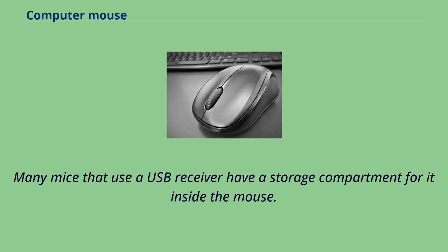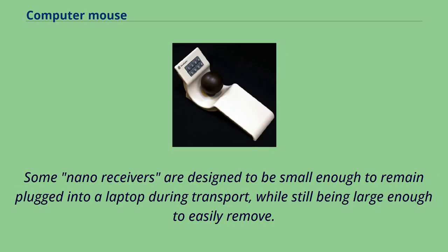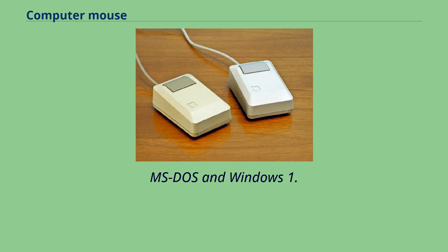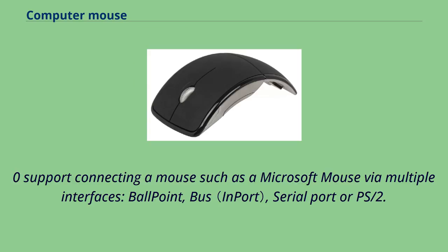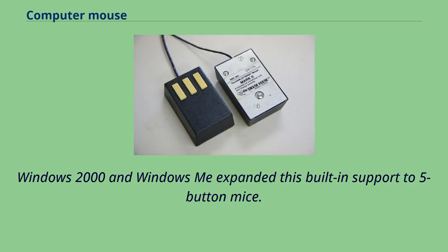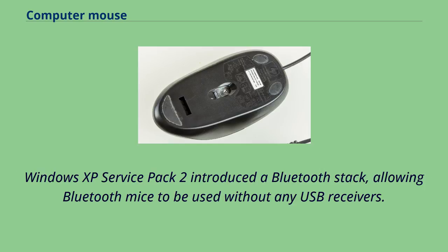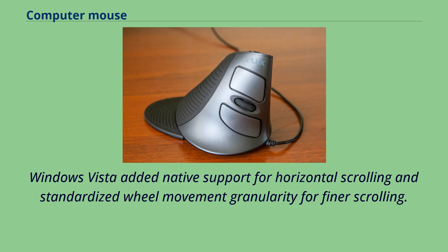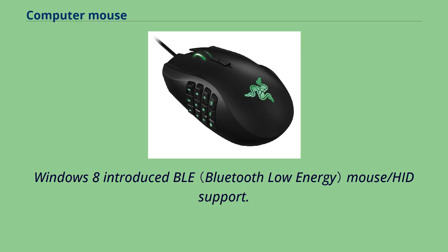MS-DOS and Windows 1.0 supported connecting a mouse via multiple interfaces including ballpoint, bus, serial port, or PS/2. Windows 98 added built-in support for USB human interface device class with native vertical scrolling support. Windows 2000 and Windows Me expanded built-in support to five-button mice. Windows XP Service Pack 2 introduced a Bluetooth stack, allowing Bluetooth mice to be used without any USB receivers. Windows Vista added native support for horizontal scrolling and standardized wheel-movement granularity for finer scrolling. Windows 8 introduced HLE mouse/HID support.